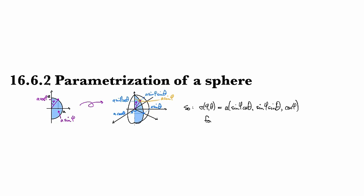for phi between zero and pi, and theta between zero and two pi, as usual, then that will give us the spherical shell of radius a,